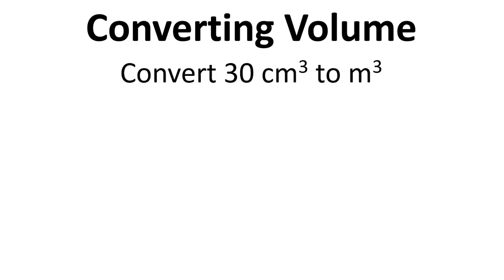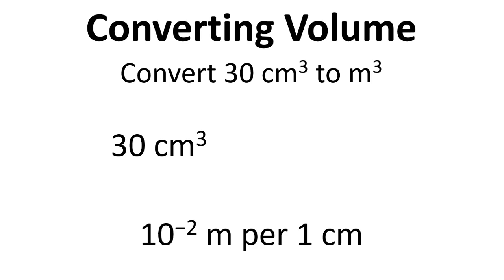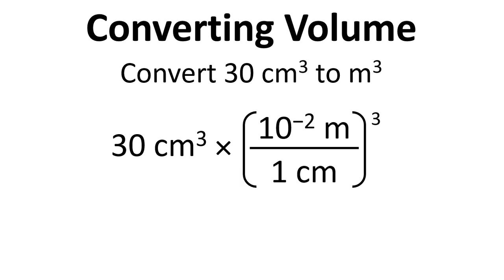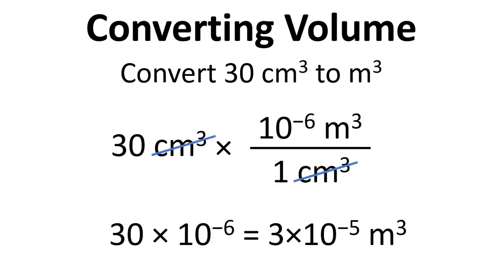Final example: 30 centimeters cubed converted to meters cubed. We write things down, 10 to the minus 2 meters per centimeter. We cube that, work everything out, and we find that we've got 3 times 10 to the minus 5 meters cubed.